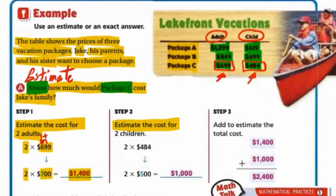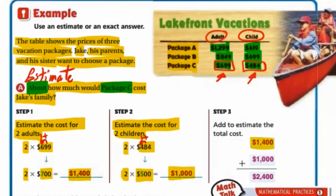Step 2: estimate the cost for 2 children. We have 2 multiplied by 484. 8 is a strong number, it gives 1 to 4, so 4 becomes 5, making it 500. 500 multiplied by 2 equals $1,000. To get the total cost of Jack's family, add them together: $1,400 plus $1,000. 0+0=0, 0+0=0, 4+0=4, 1+1=2. The total estimated cost of Jack's family is $2,400.